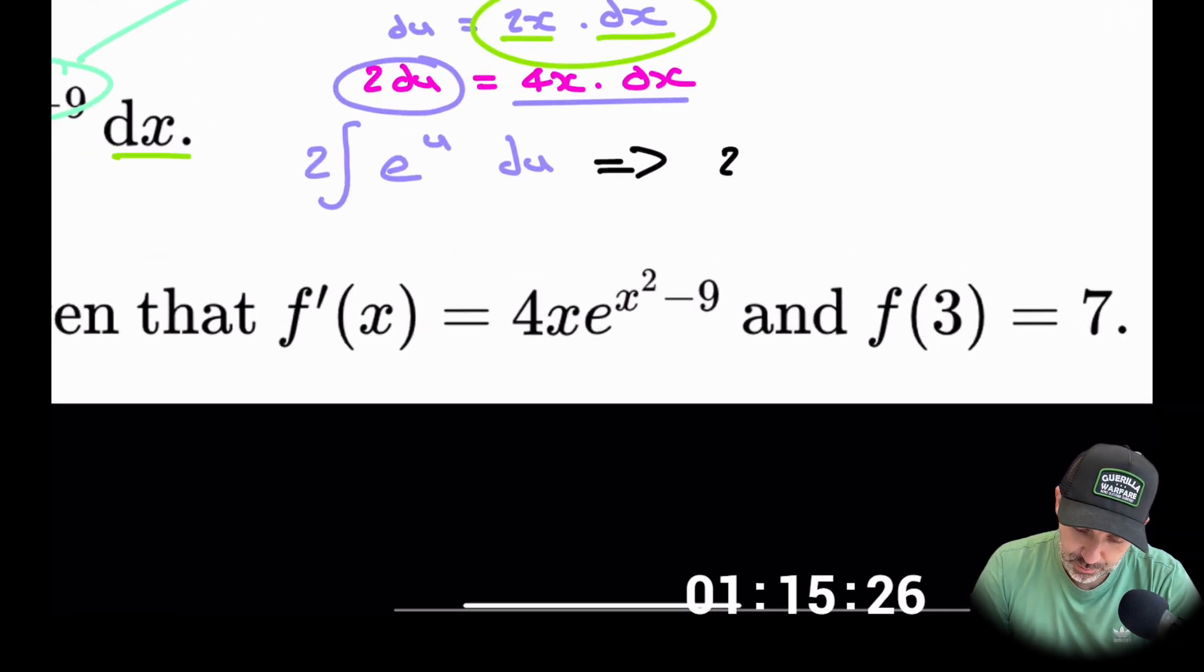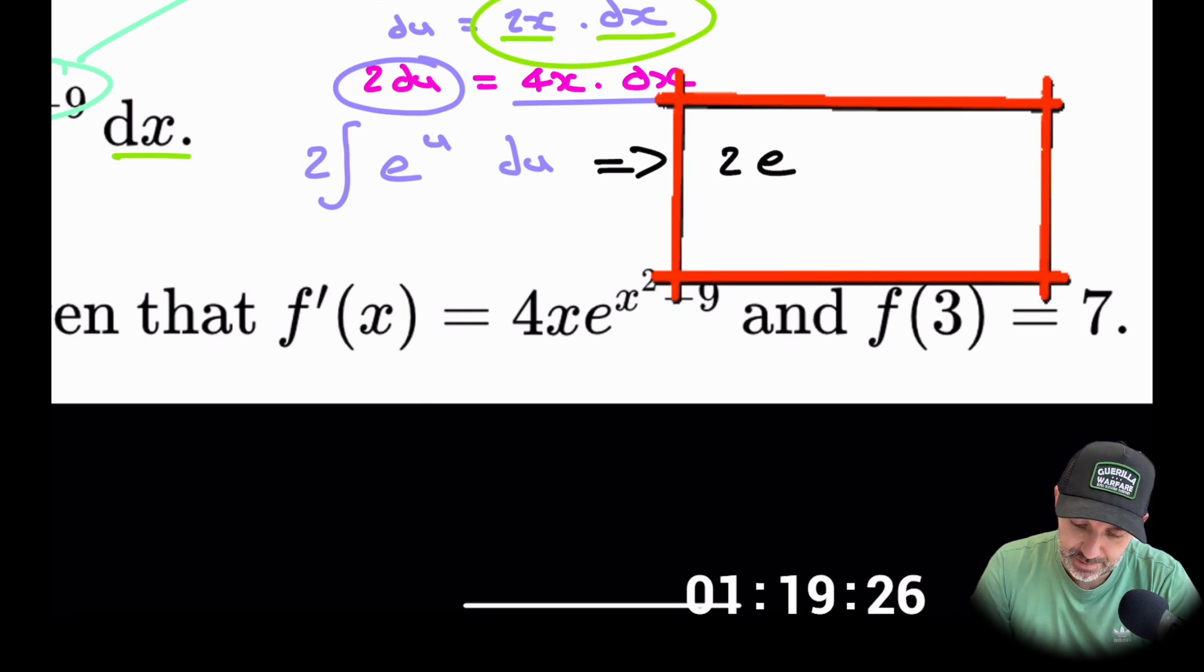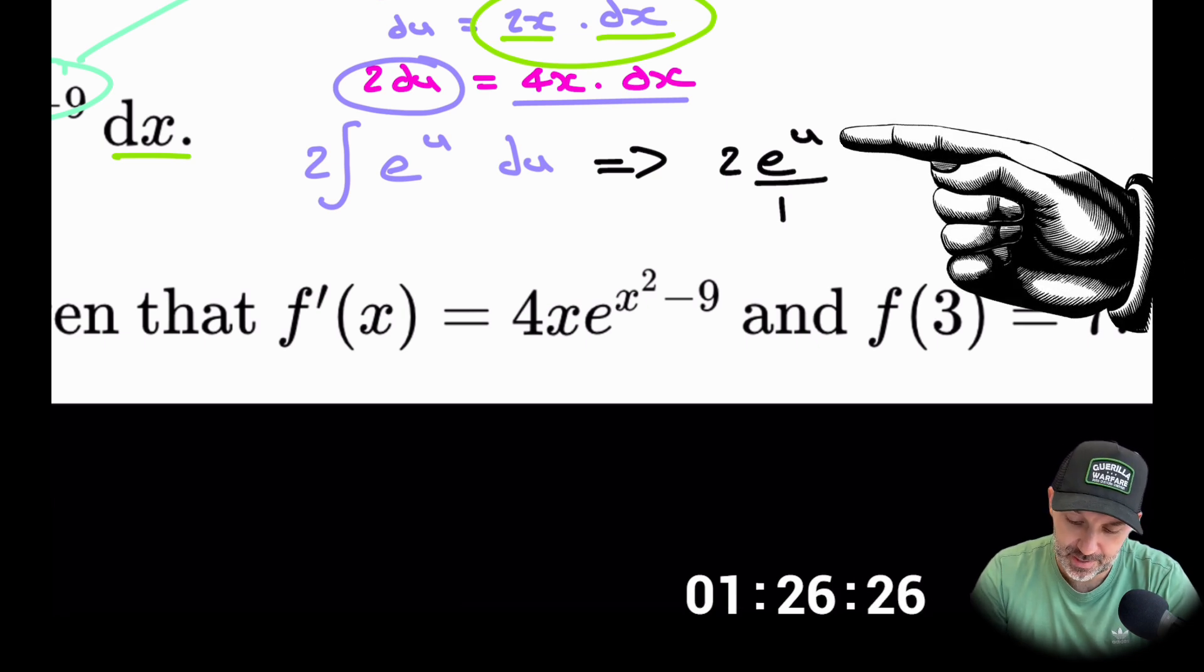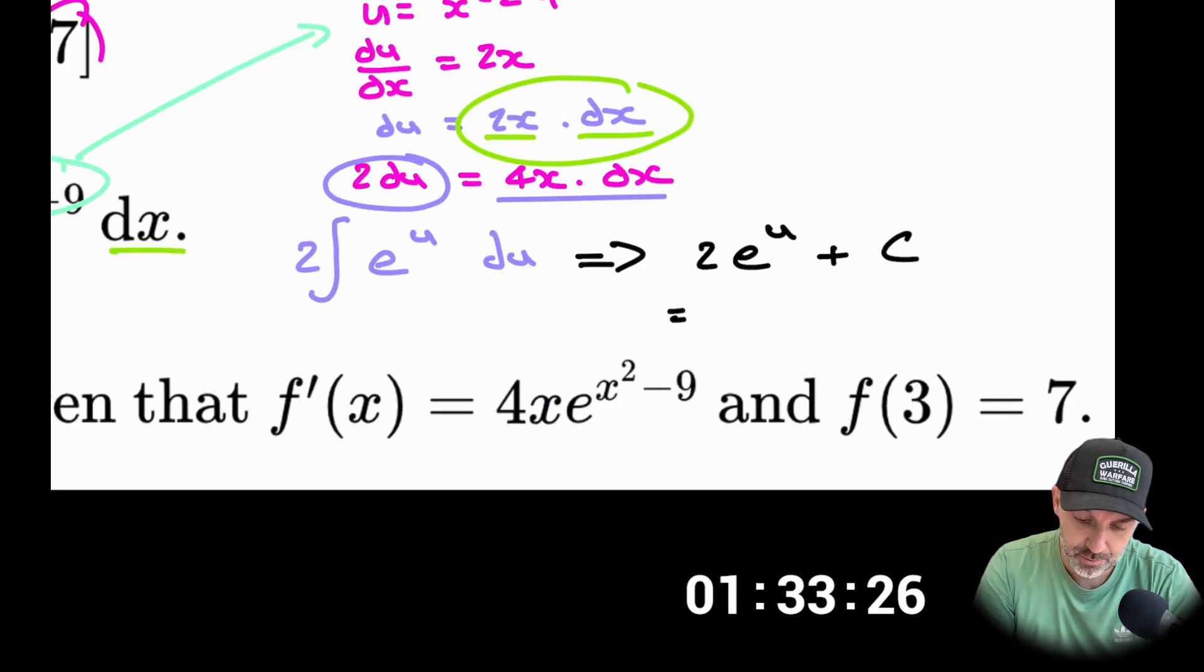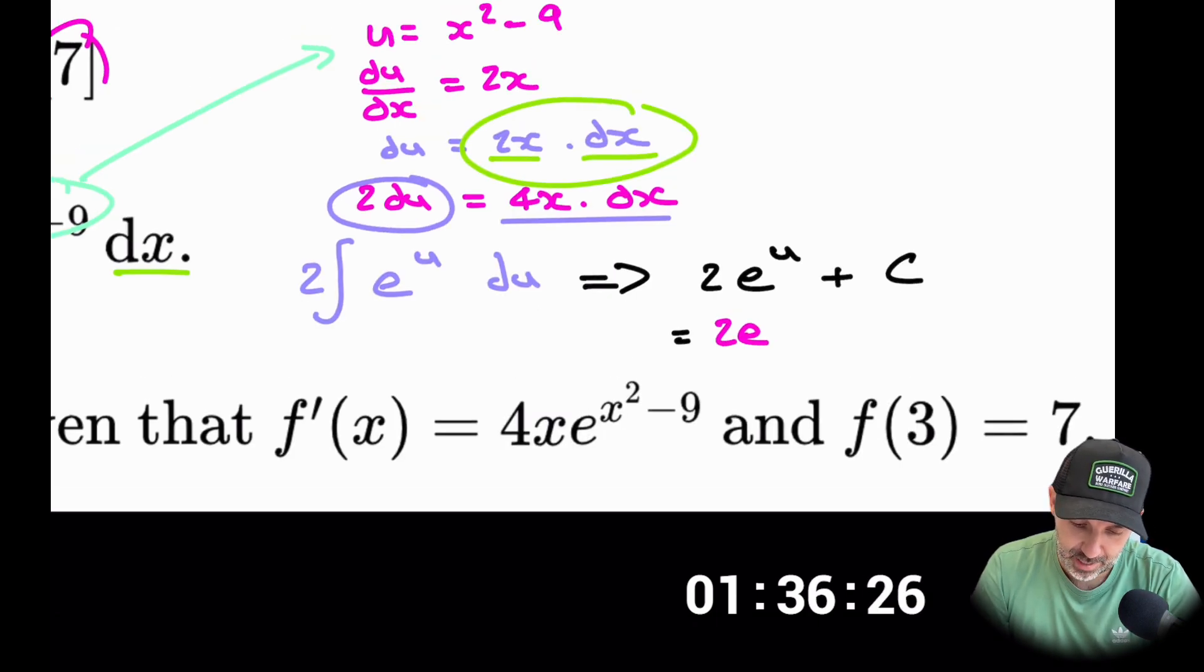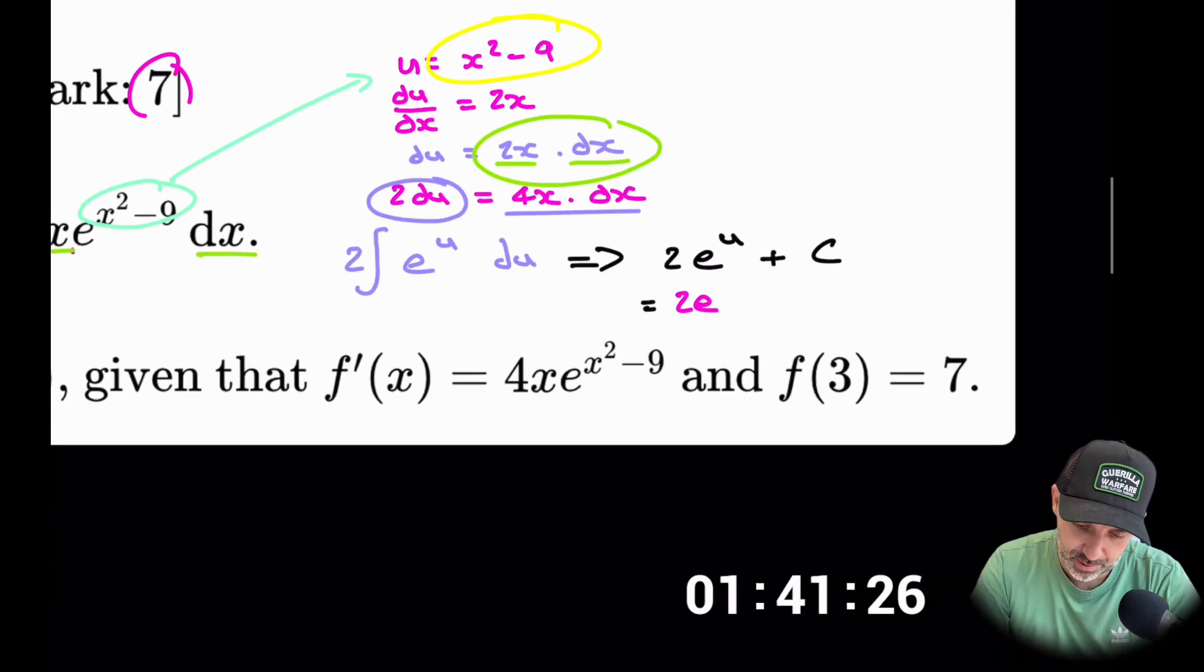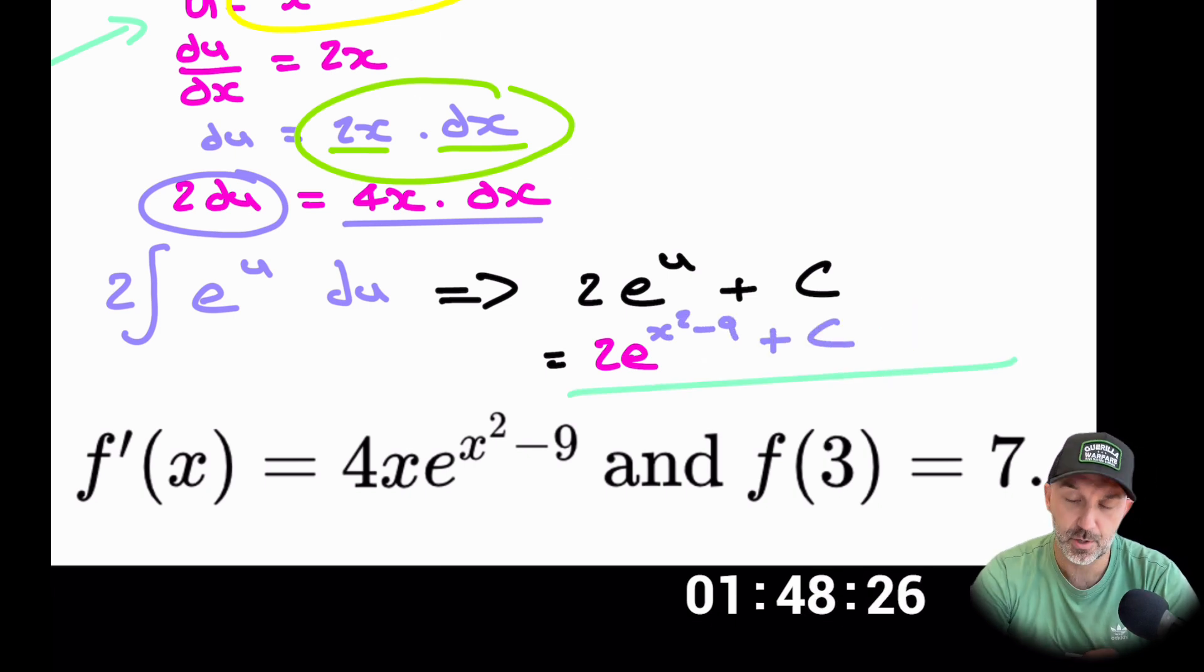So remember the 2 would just remain on the outside of the integral, and we can integrate e to the u and you would just get e to the u divided by 1. Remember you would divide by the derivative of the power, but in that case it's just 1, so I'm just going to remove that, plus c. Then now we just have to substitute the value of u back in, which would be e to the—remember u was this initial substitution which was x squared minus 9—so x squared minus 9 plus c. That is the end of part a of the question.